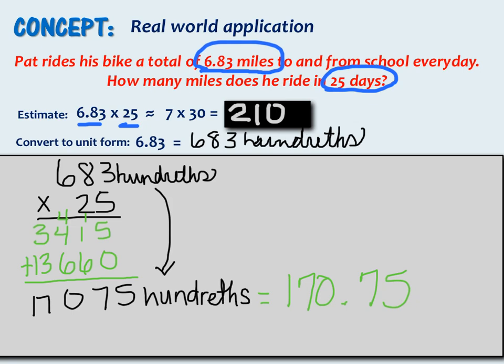Now let's compare that to our original estimate. Our estimate was approximately 210. And remember, we said this was a high estimate because both of our digits or both of our factors were rounded up. Therefore, 170 and 75 hundredths is a very reasonable answer for our problem.